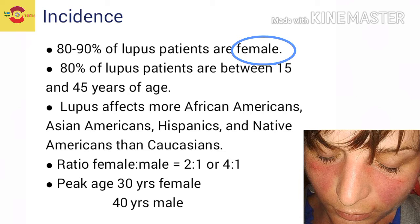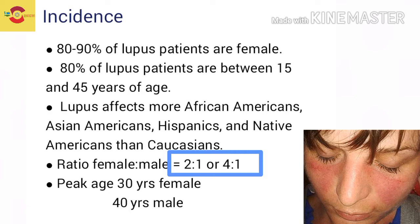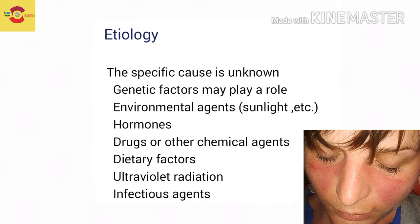80 to 90 percent of lupus patients are female, and 80 percent of lupus patients are between 15 to 45 years of age. The ratio of female to male is 2:1 in early age before puberty, or 4:1 after puberty.